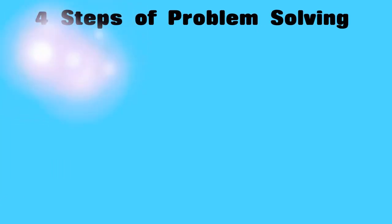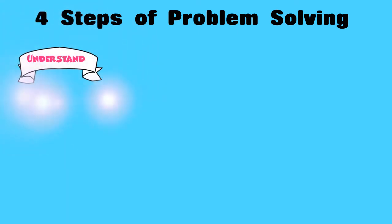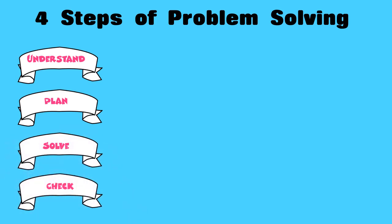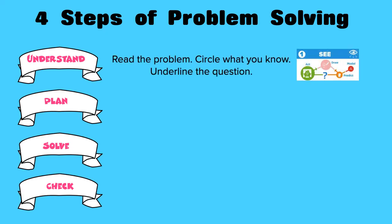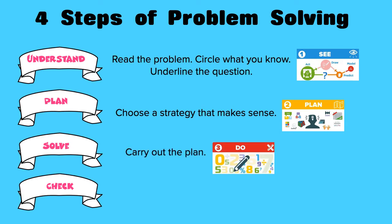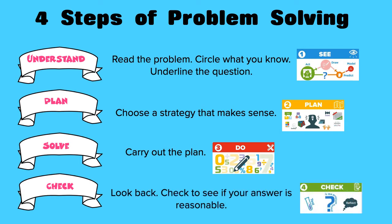First, we understand. Then, we plan. Afterwards, we solve. And lastly, we check. This is known as the UPSC method. When we understand, we read the problem, circle what we know, and underline the question. When we plan, we choose a strategy that makes sense. When we solve, we carry out the plan. And lastly, when we check, we look back to see if our answer is reasonable.